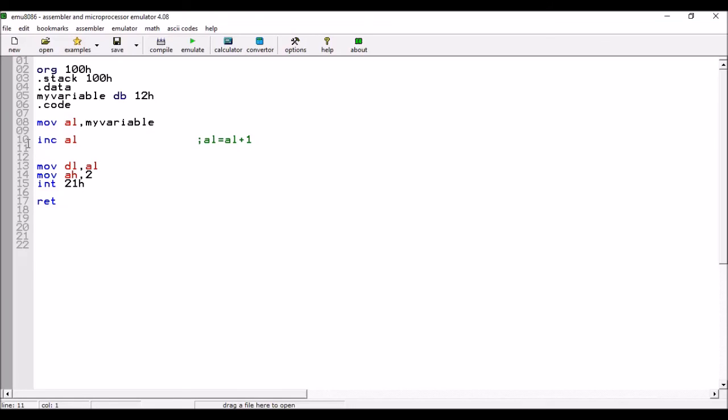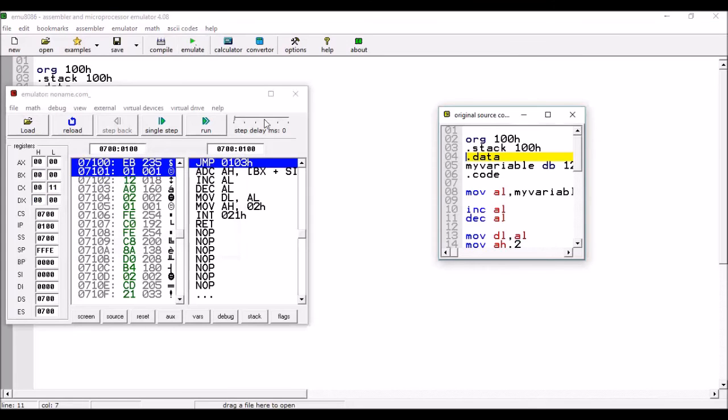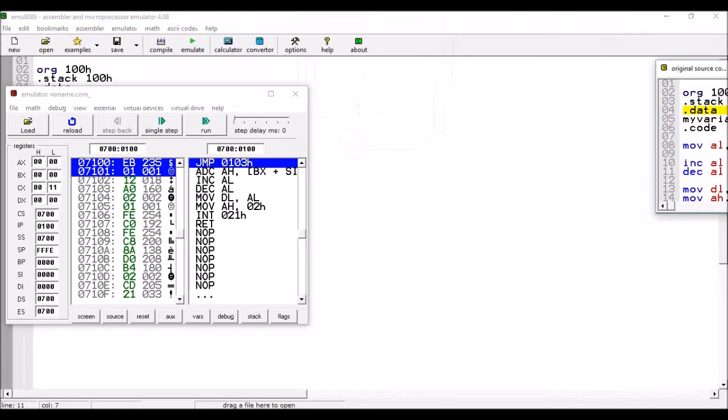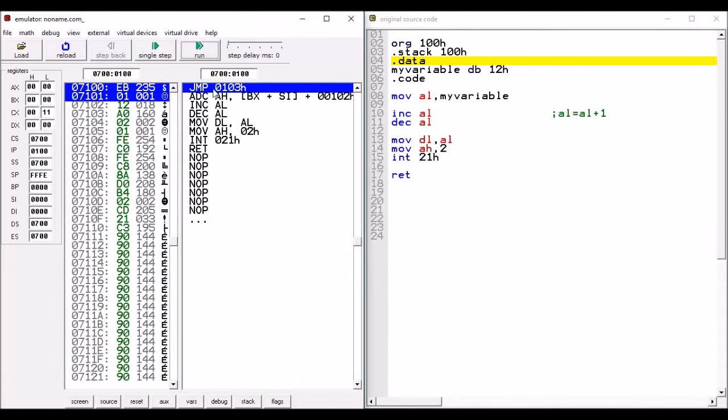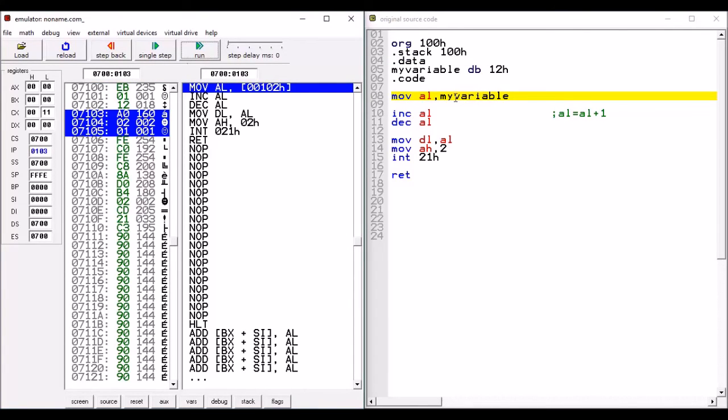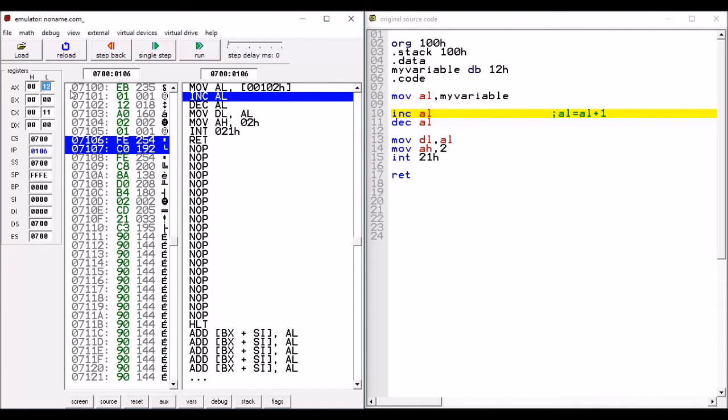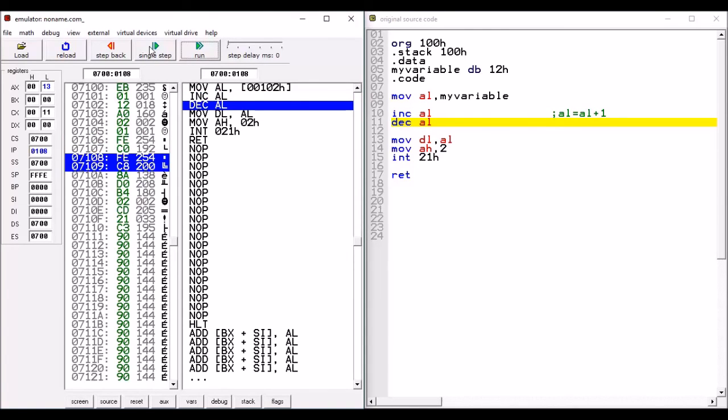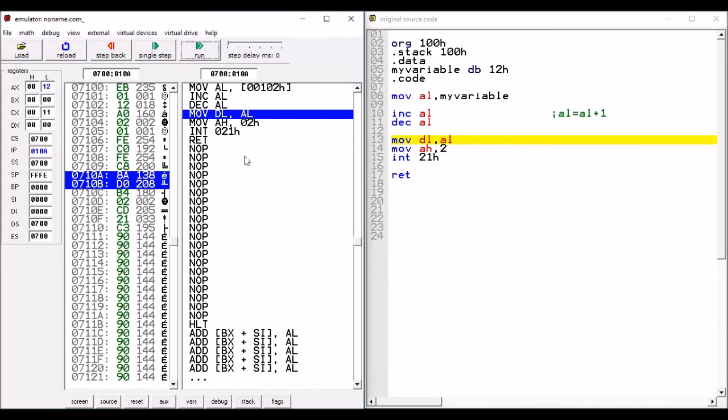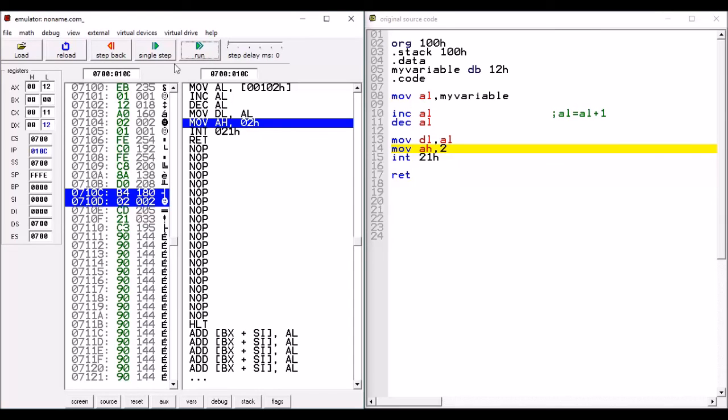After execution, AL value will be 11H. Now, if I want AL value to be 10H, I will put decrement here. What will happen? I will run single step. First line executed - my variable was 12H stored. AL was 12H stored. Now increment AL command executed, 13H. Now decrement AL command, 12H. Now we have AL value moved to DL. This 12H moved, then it was printed.